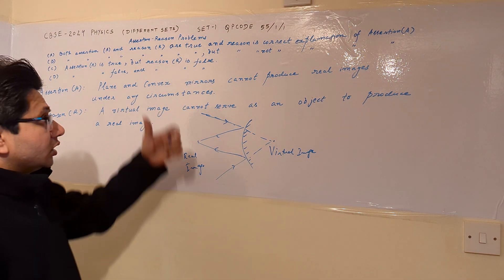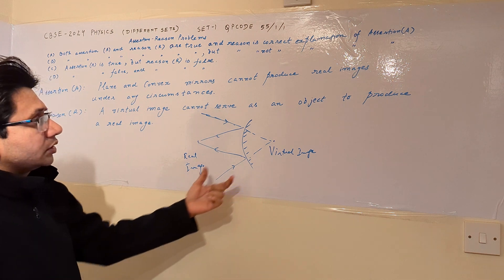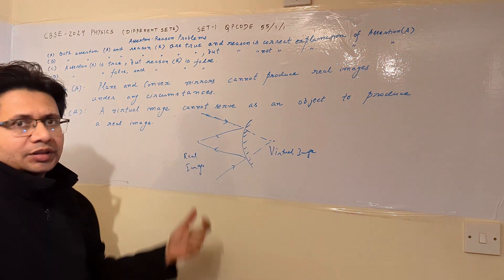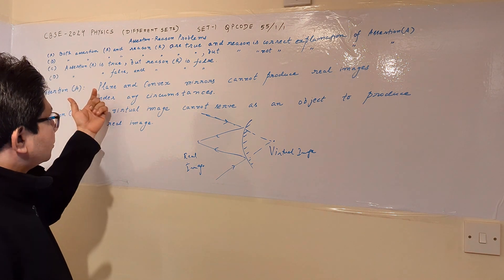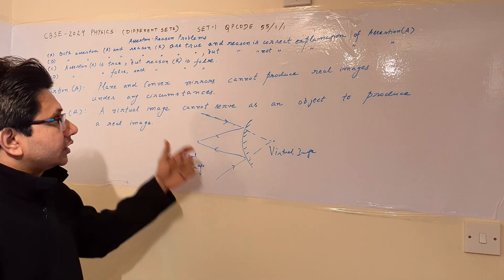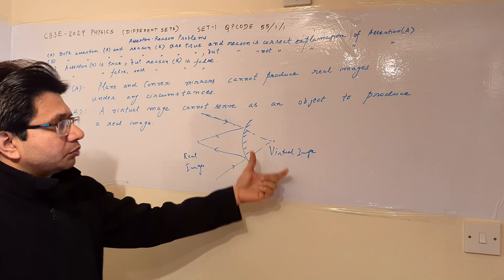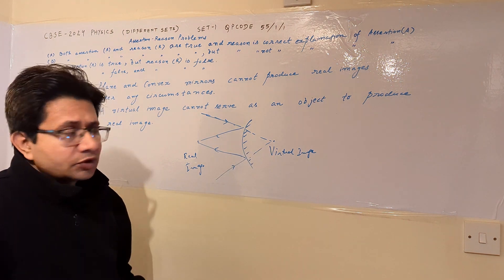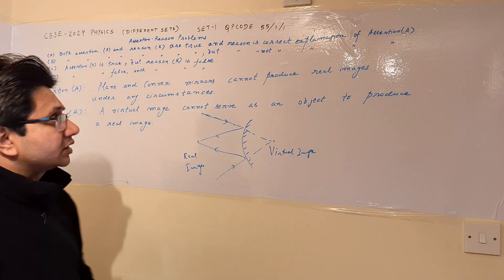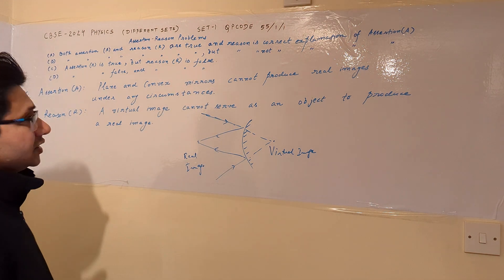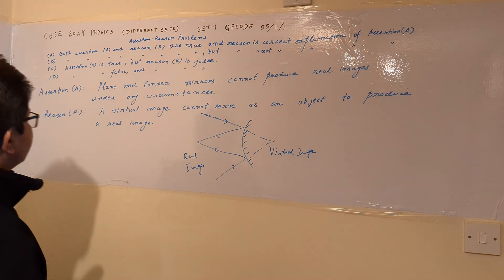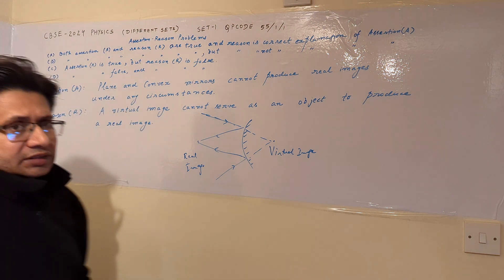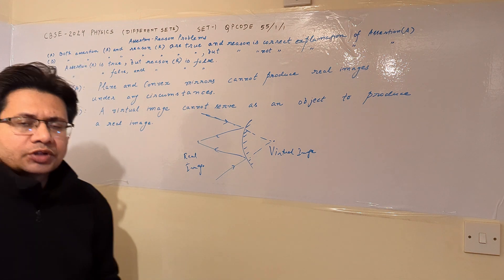The assertion is also a false statement, because under the condition of a virtual image acting as an object, plane and convex mirrors can produce real images. Both plane and convex mirrors can produce real images when a virtual image acts as an object. So both the assertion and the reason are false statements, and option D is correct — assertion is false and reason is false.